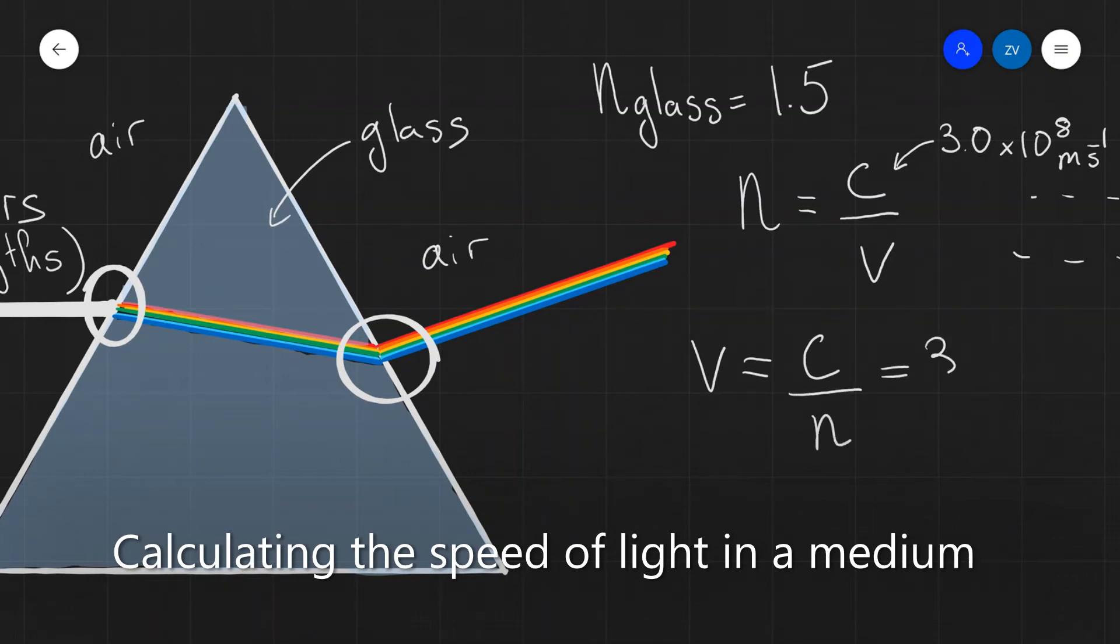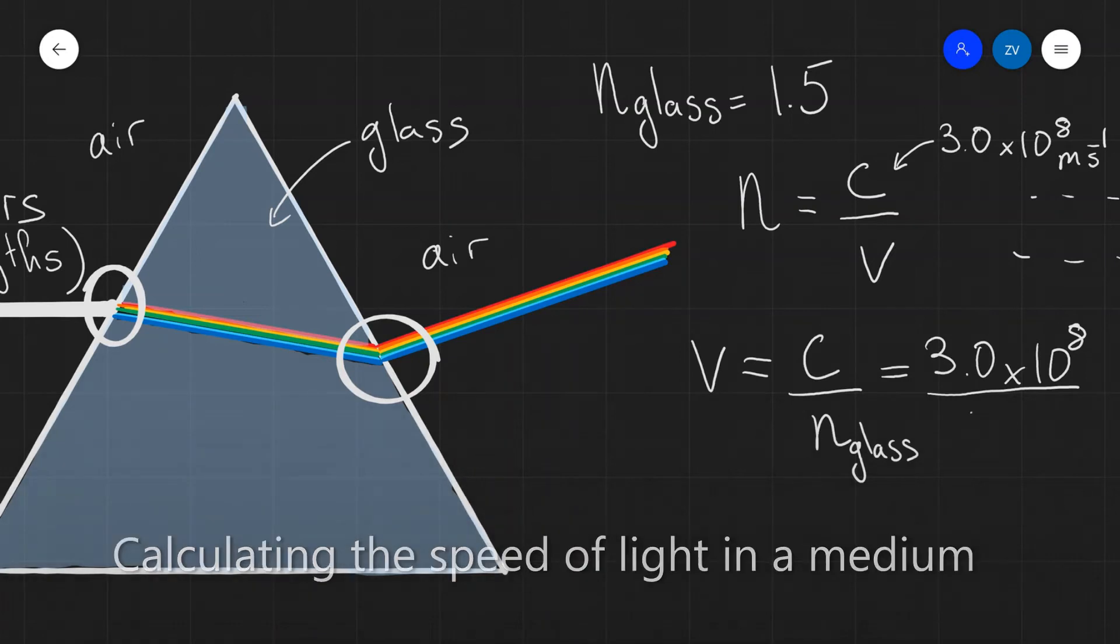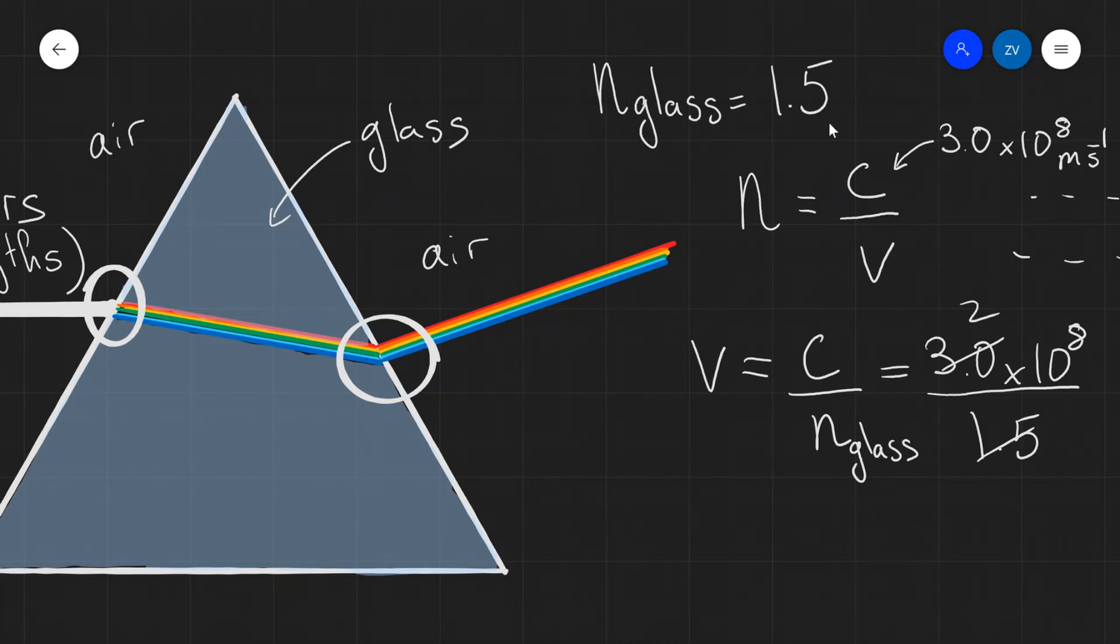Which will be 3.0 times 10 to the power of 8 meters per second, and we're going to be dividing that by the refractive index of glass, which is approximately 1.5. And what we're going to be left with is that the speed of light in glass is going to be equal to 2.0 times 10 to the power of 8 meters per second.